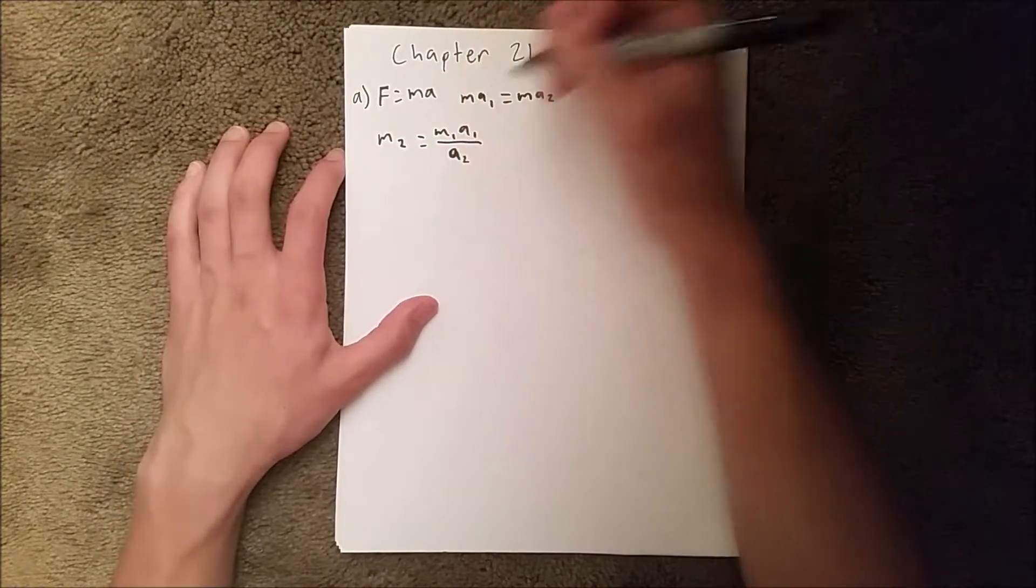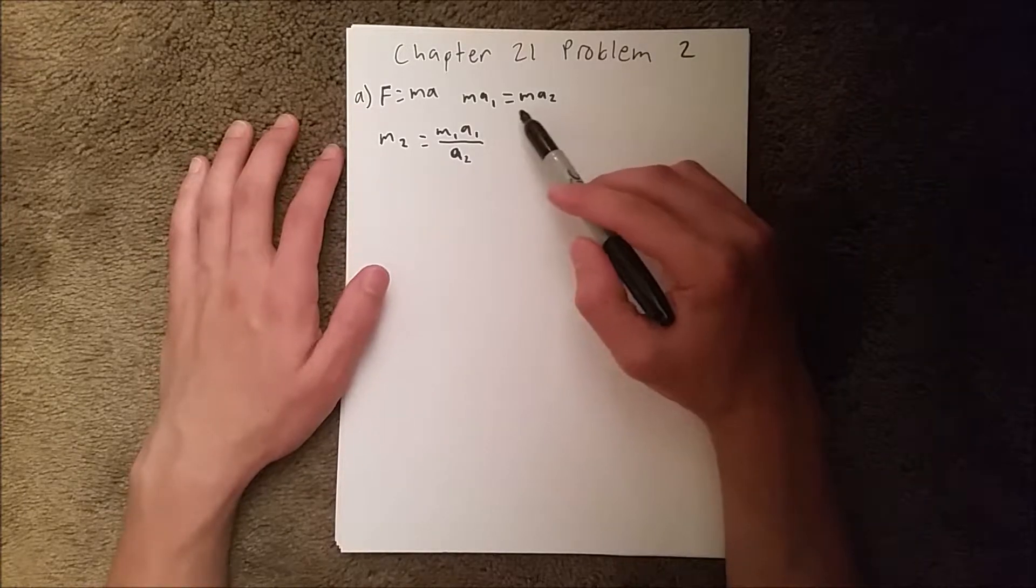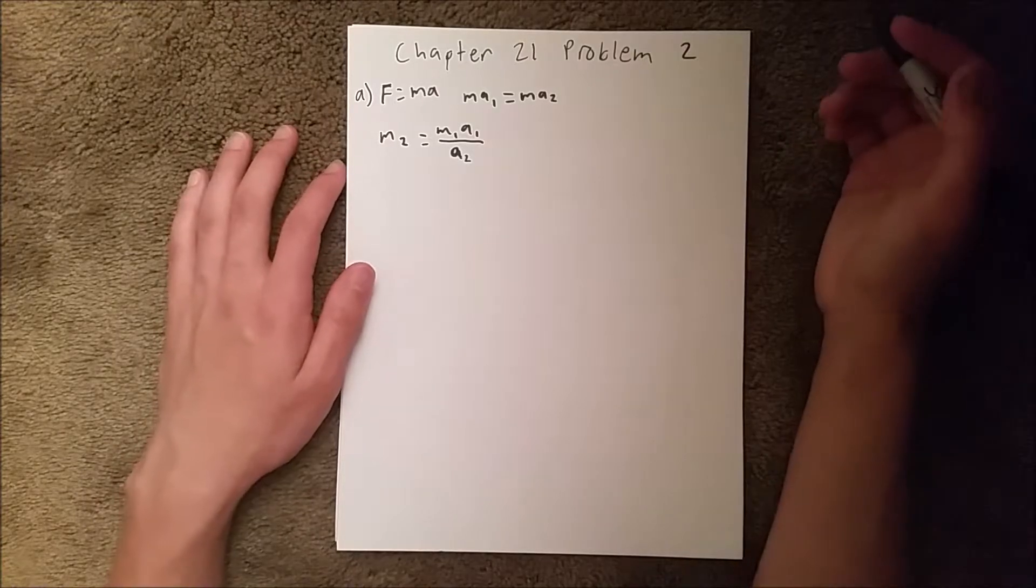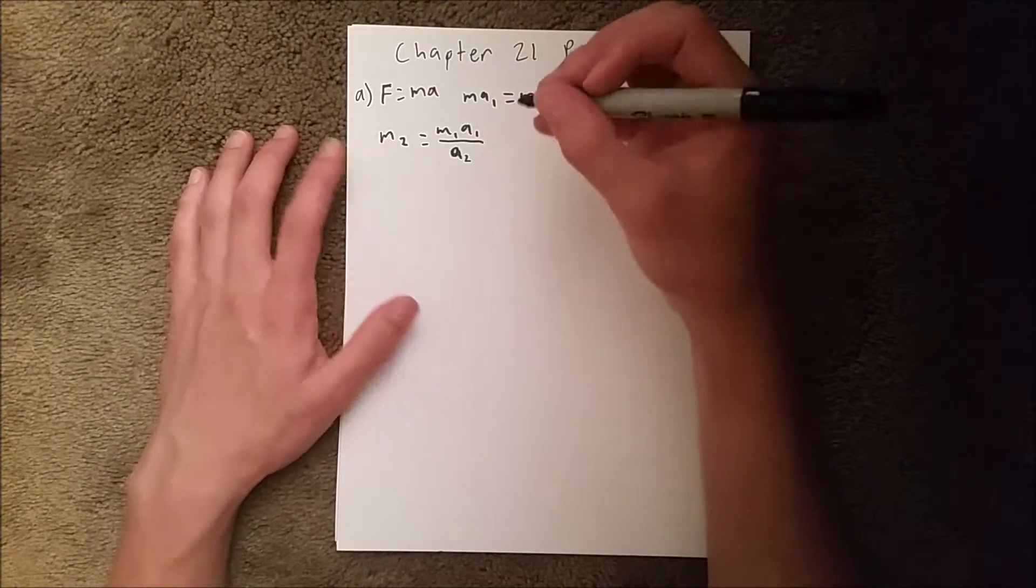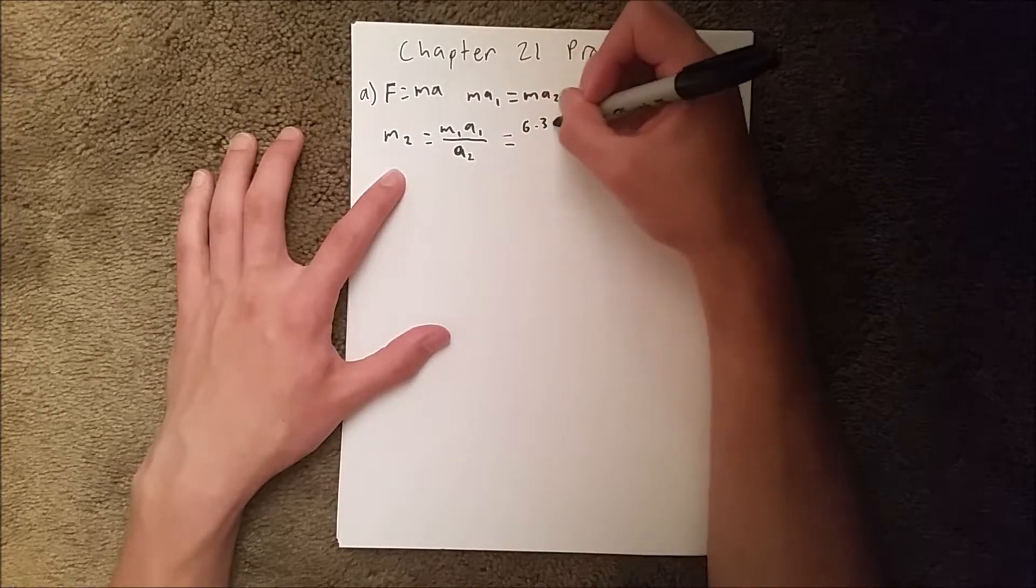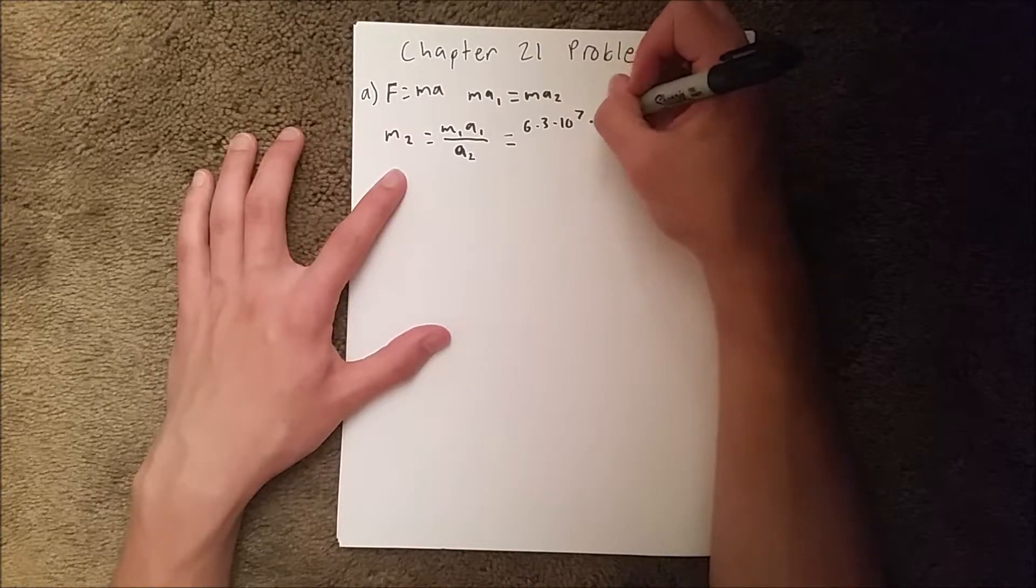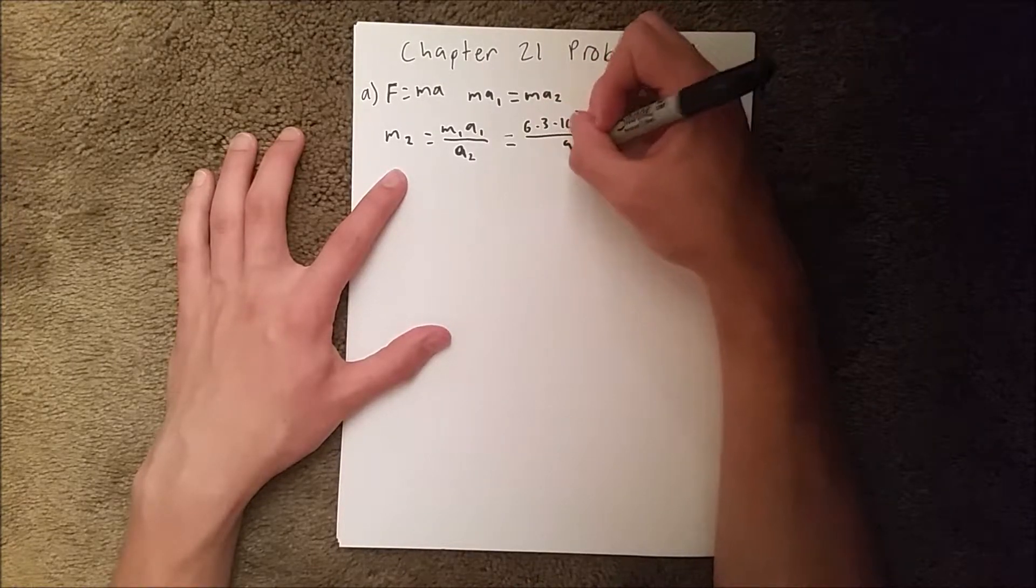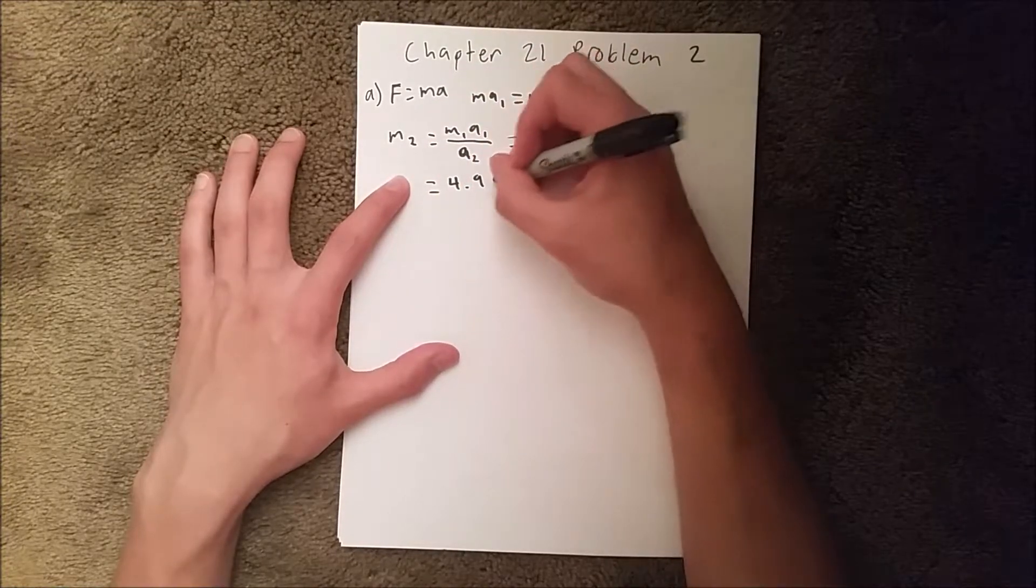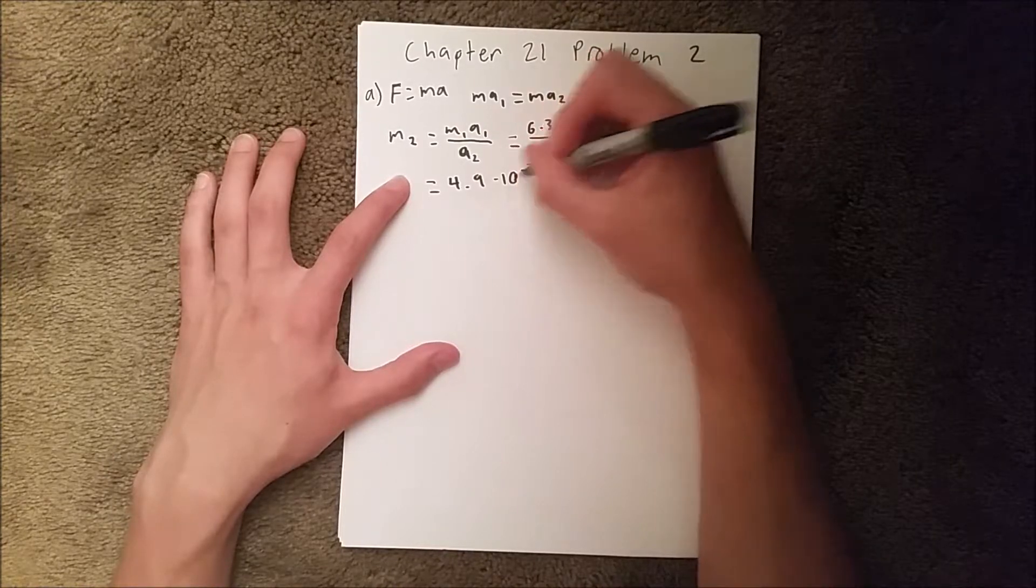Those look like nines but they're a's. So when you plug in those values that were given, which is 6.3 times 10 to the negative 7 times our acceleration of 7 over 9, you should get 4.9 times 10 to the negative 7 kilograms.